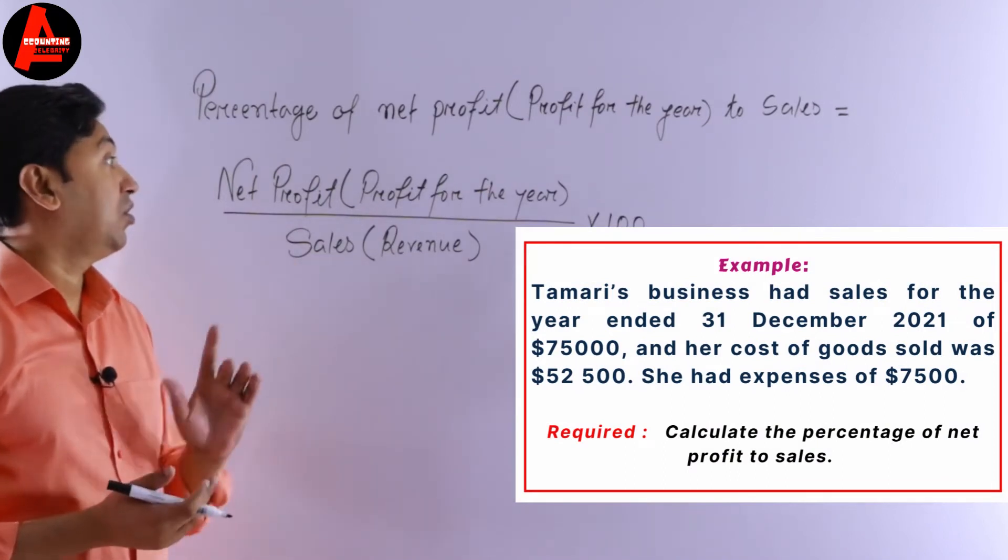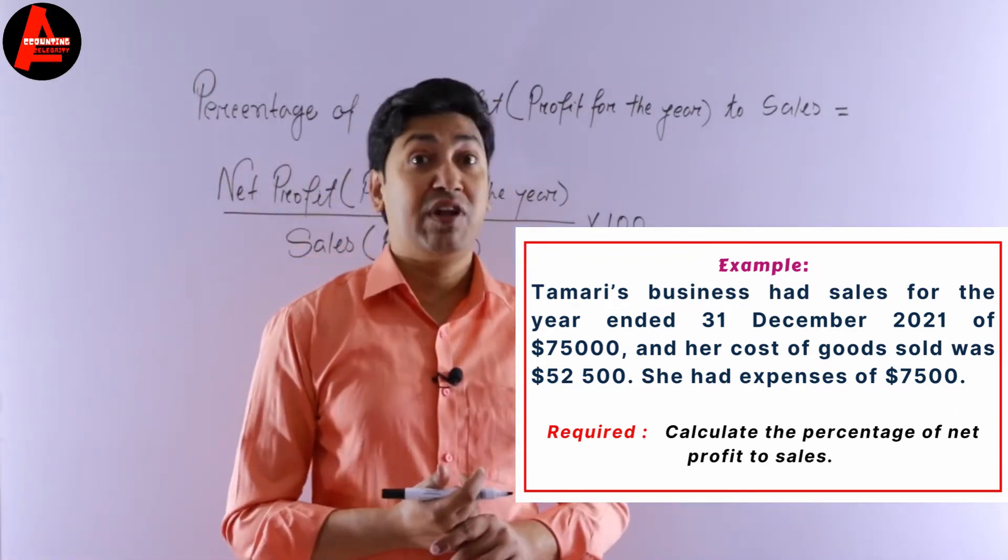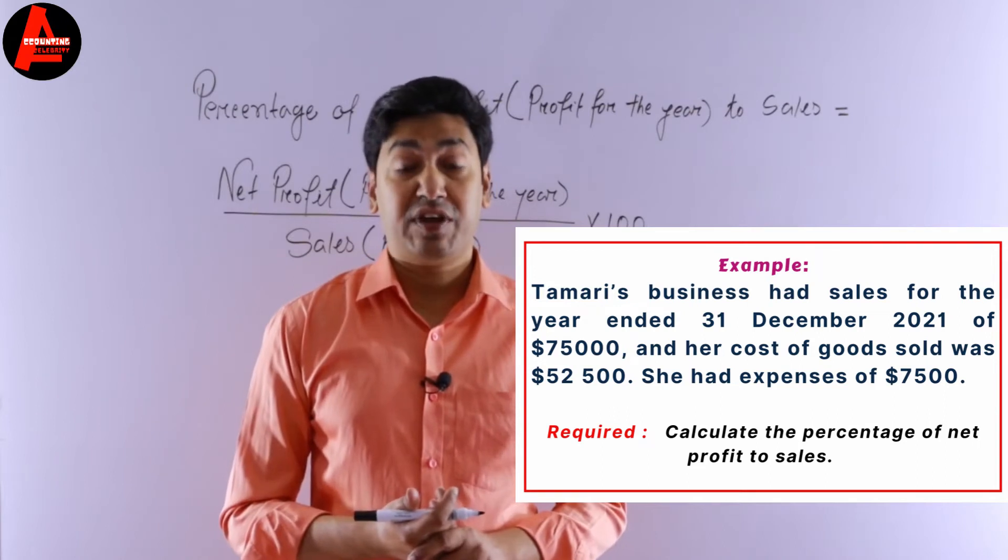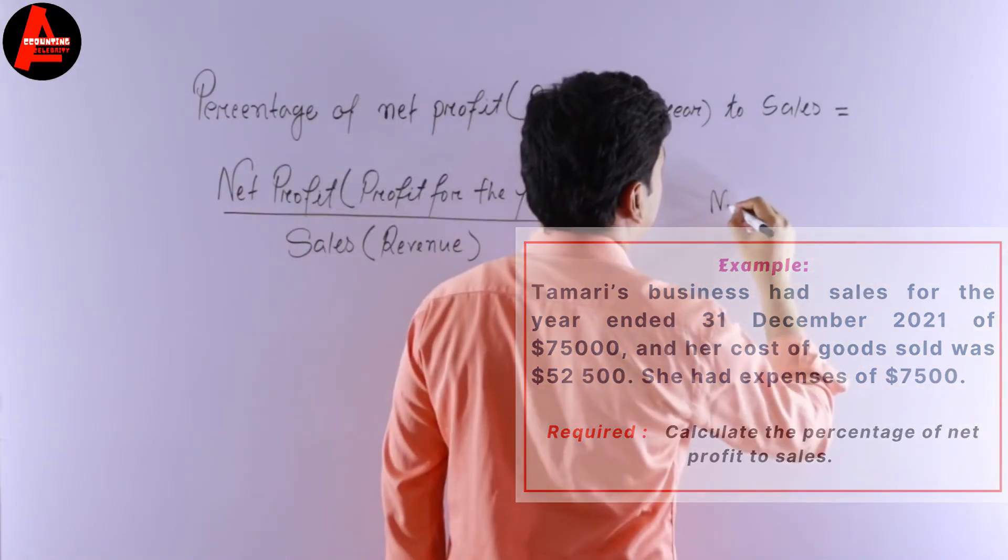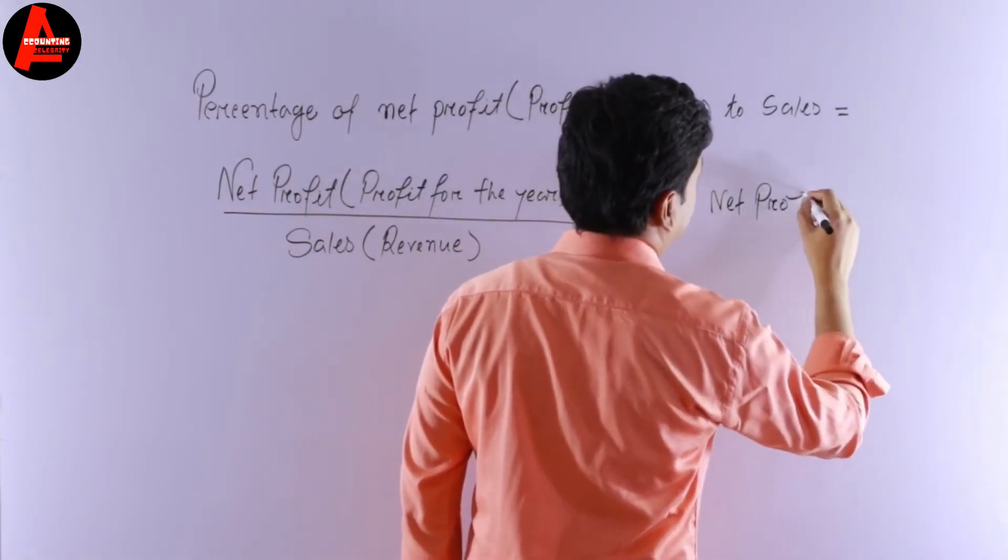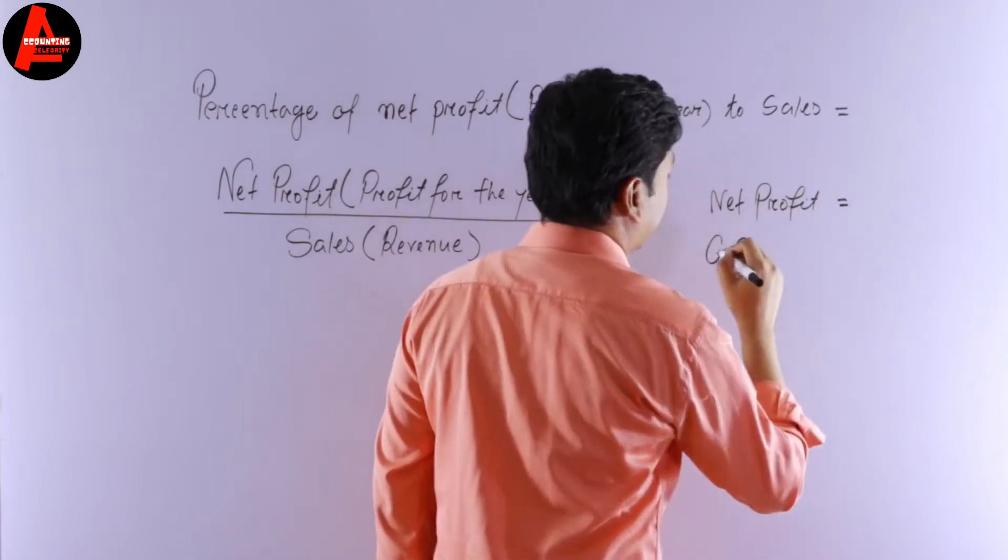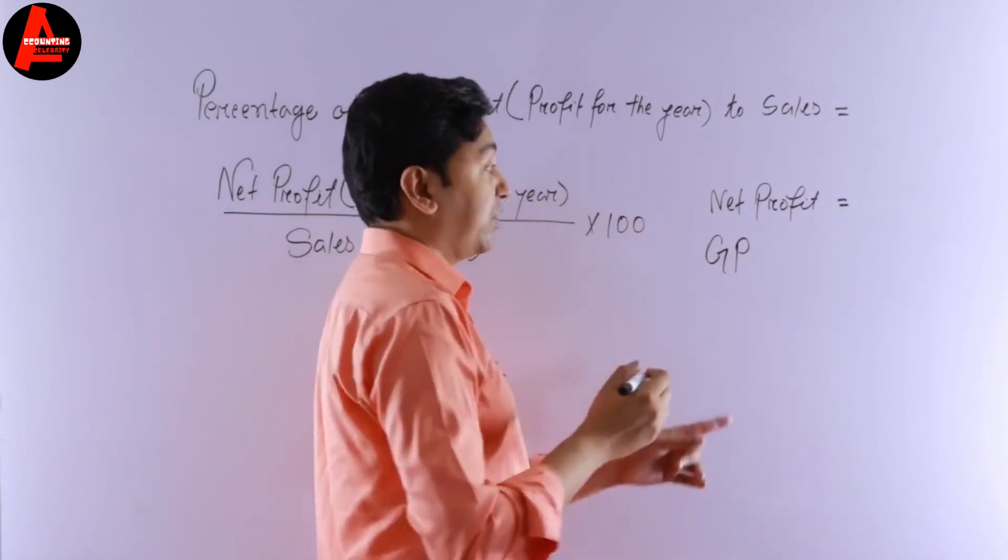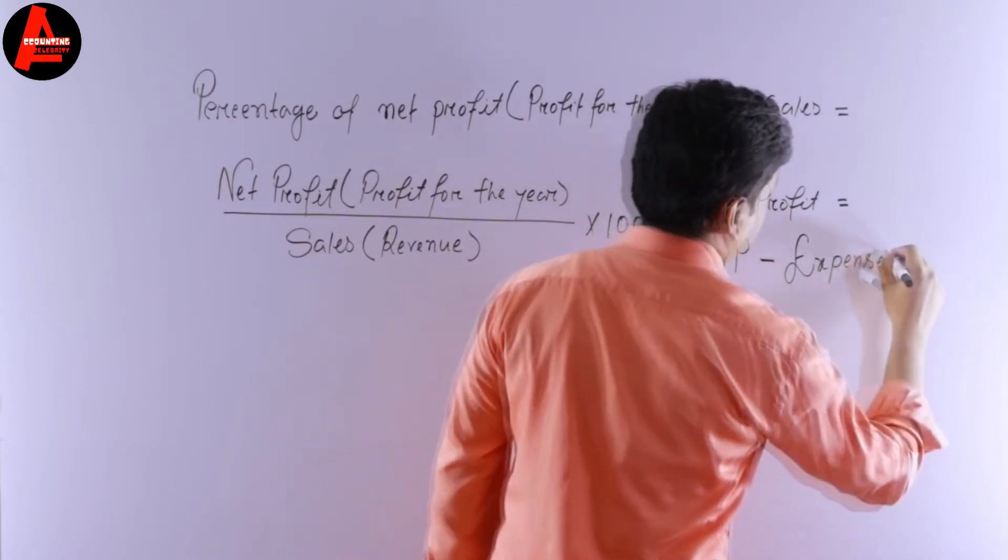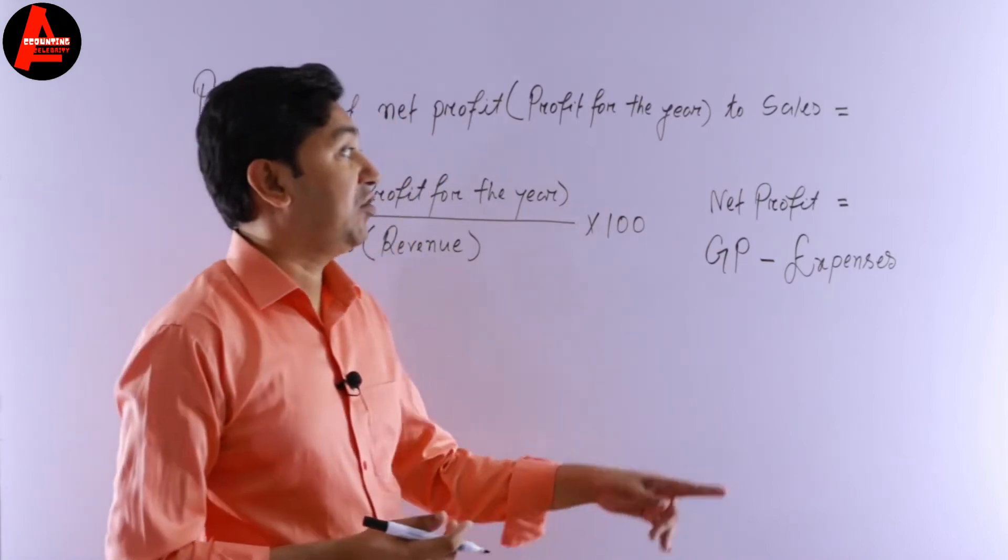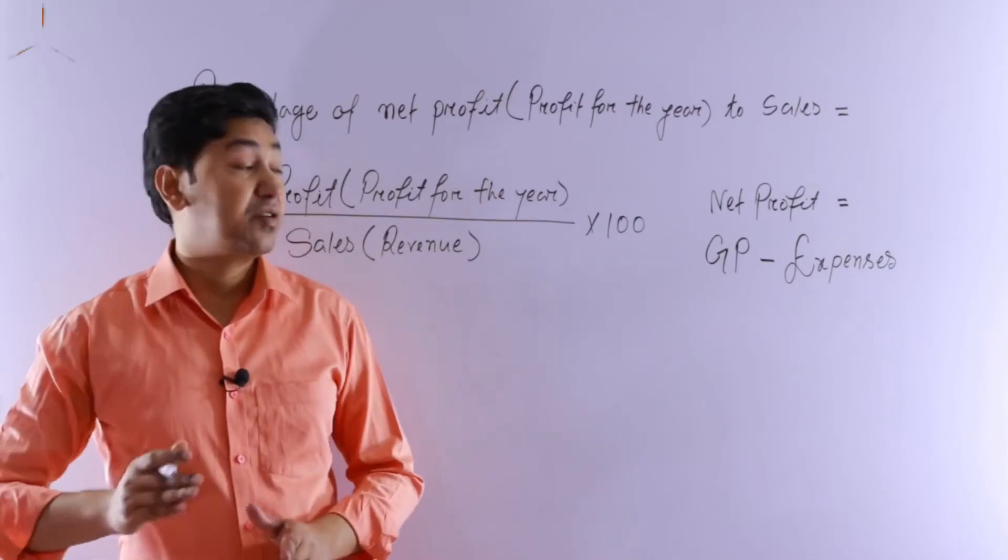In this question we have sales revenue, but there is no net profit given. So first of all we have to calculate net profit. How to calculate net profit? We know net profit equals gross profit minus expenses. Why did we write expenses? Because in this question we are given expenses which is $7,500.